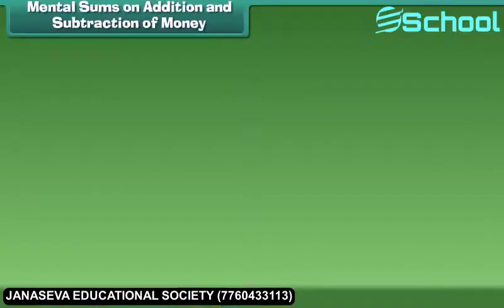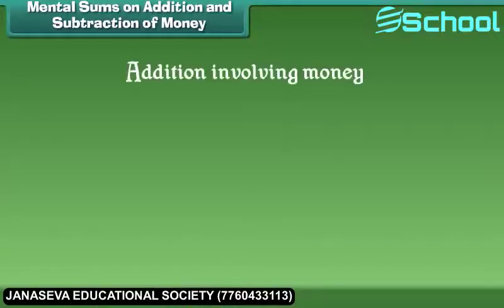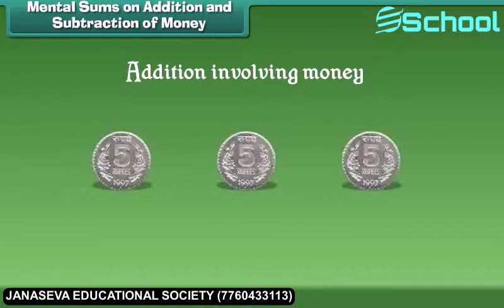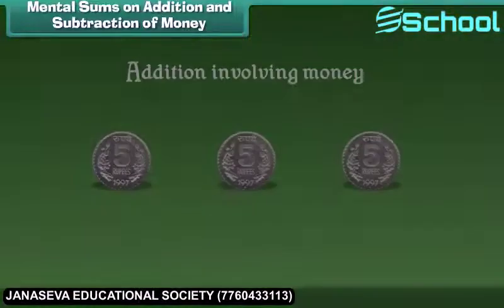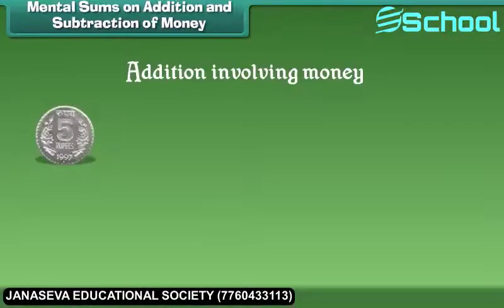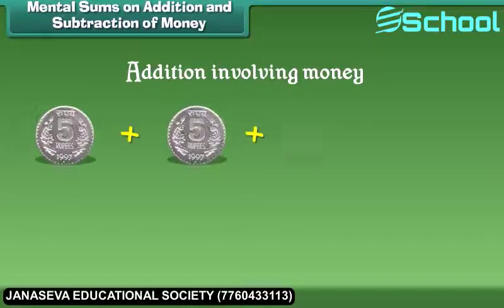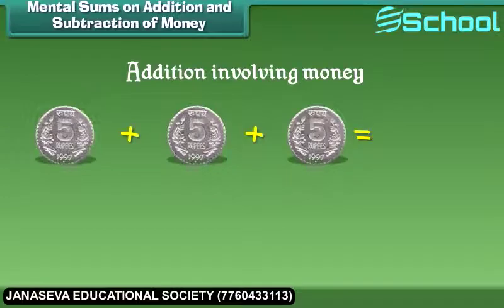Now let us learn about addition involving money. If I have three 5 rupees coins, then can you tell me the total rupees? Add 5 plus 5 plus 5, which is equal to 15 rupees.